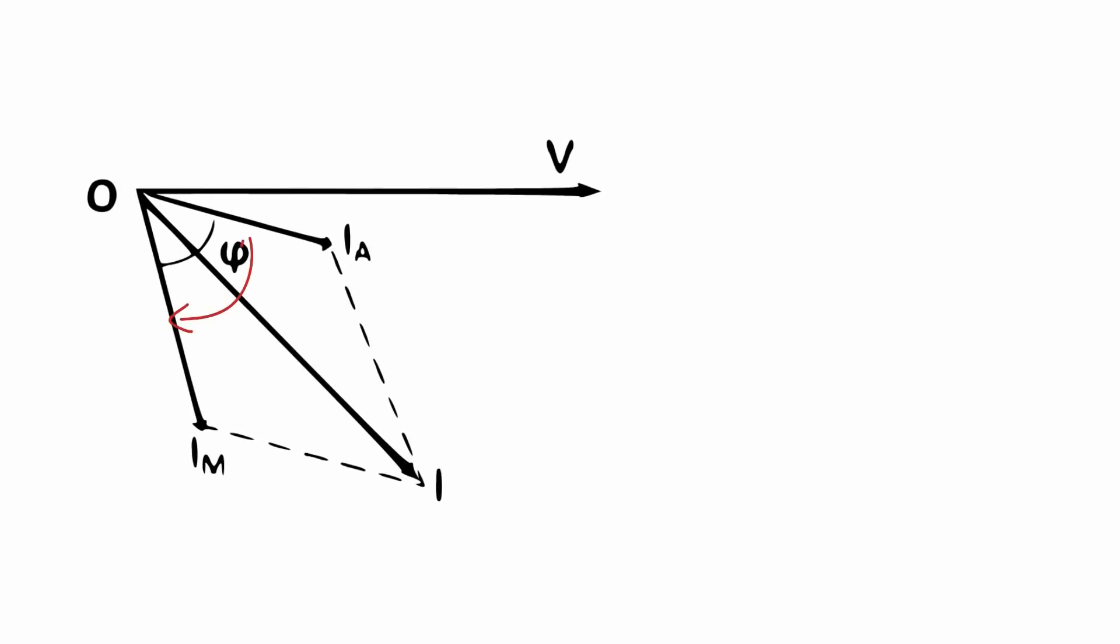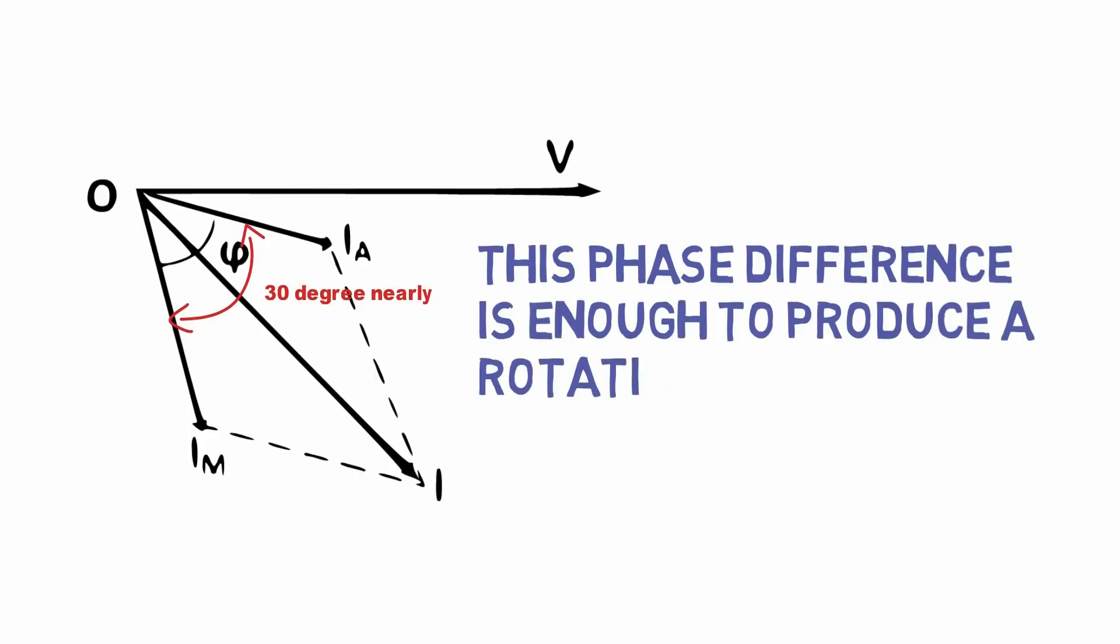So there is a phase difference between two winding currents. The phase difference is nearly thirty degree. This phase difference is enough to produce rotating magnetic field.